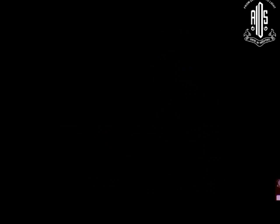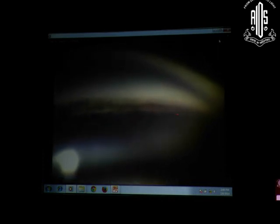Once you learn to identify the scleral spur, the patient is not at risk for developing angle closure. You may see different types of angle pigmentation in an open angle. Here the ciliary body band is visible with much heavier pigmentation compared to the previous patient — scleral spur visible, the trabecular meshwork visible, ciliary body band visible. This is a wide open angle on gonioscopy.